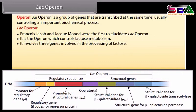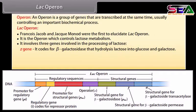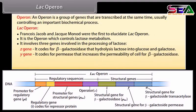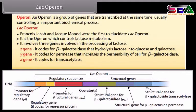The LAC operon involves three genes in the processing of lactose. The Z gene codes for beta-galactosidase, which hydrolyzes lactose into glucose and galactose. The Y gene codes for permease, which increases the permeability of the cell for beta-galactosidase. The A gene codes for transacetylase.